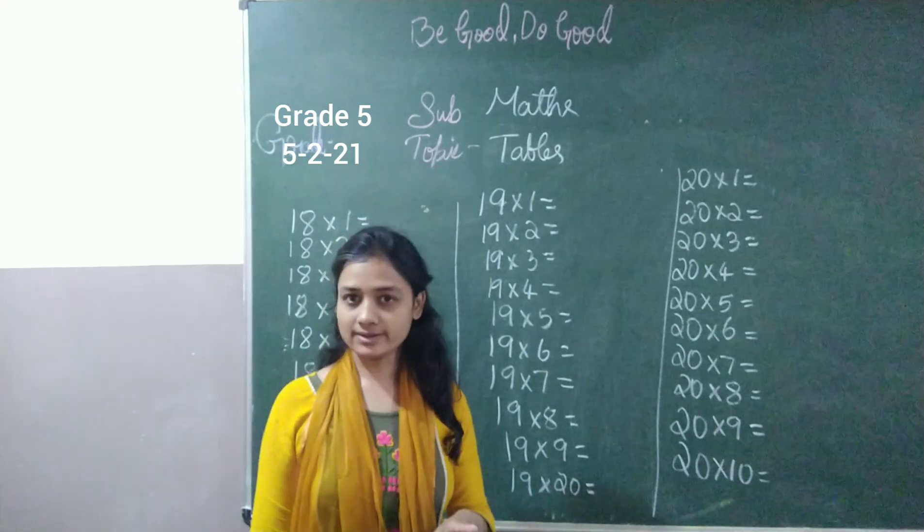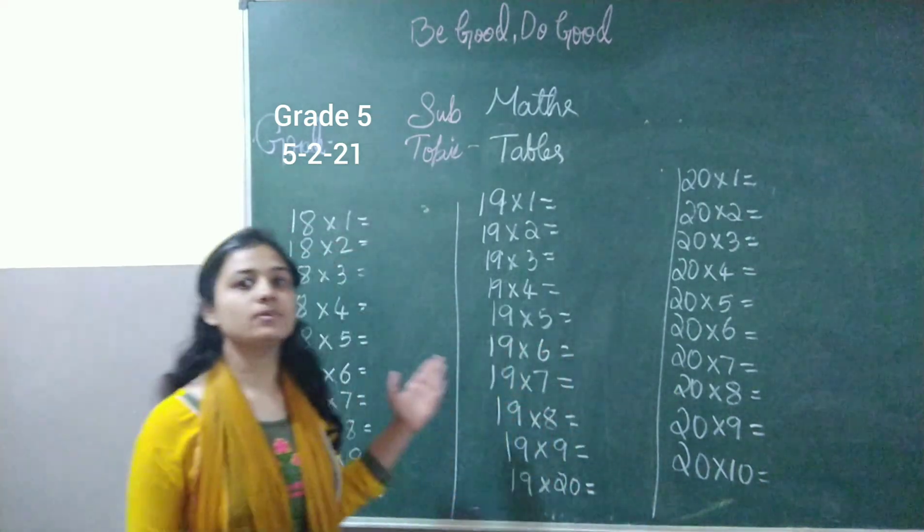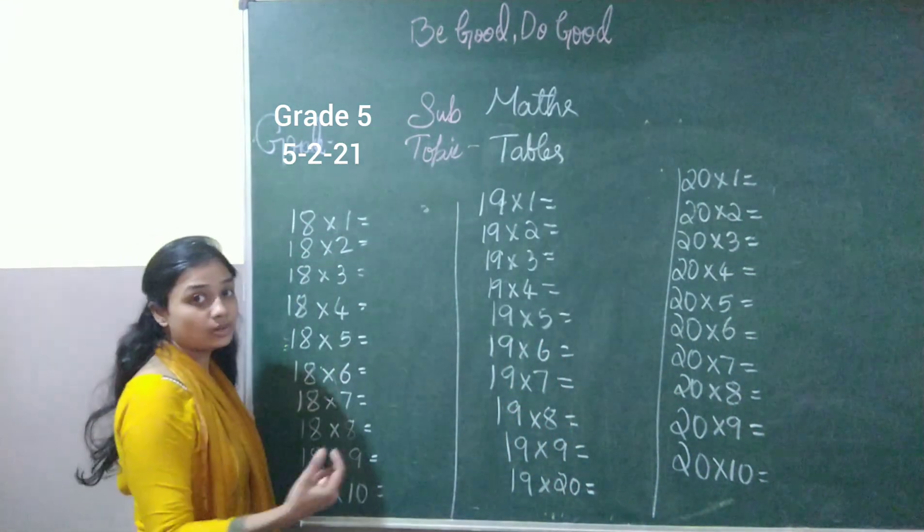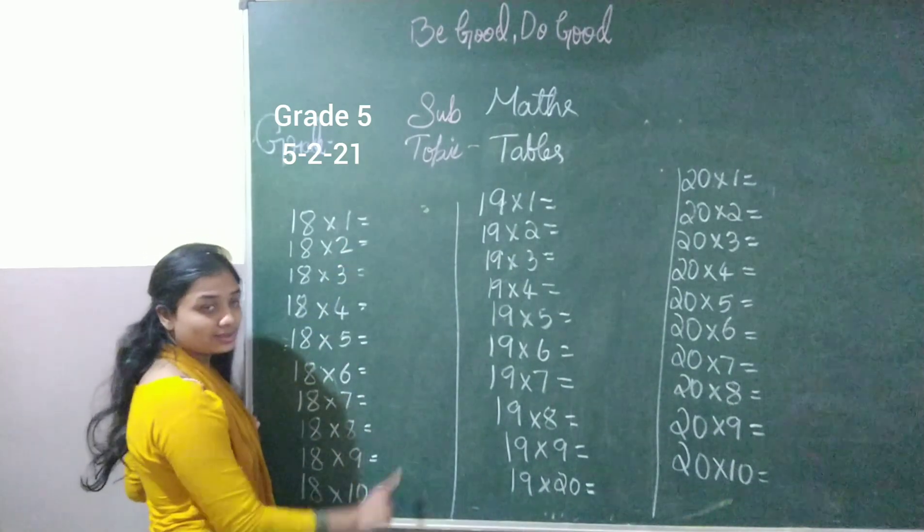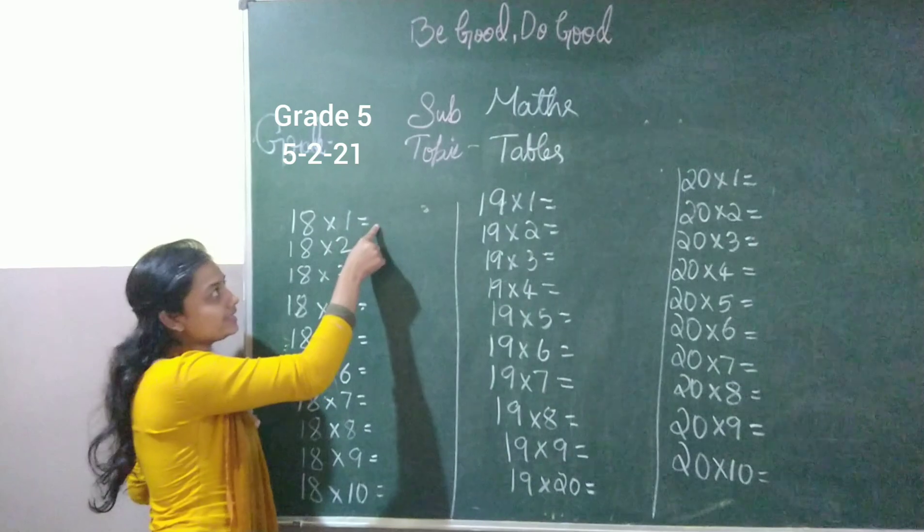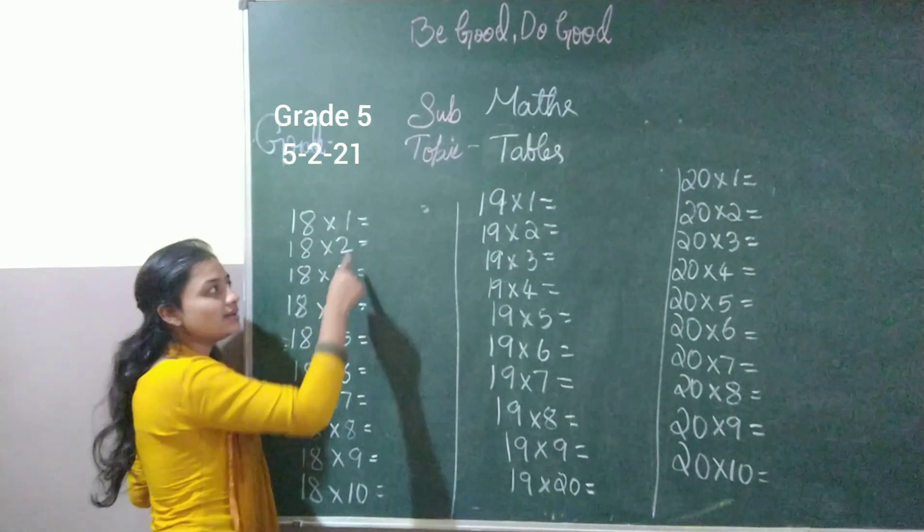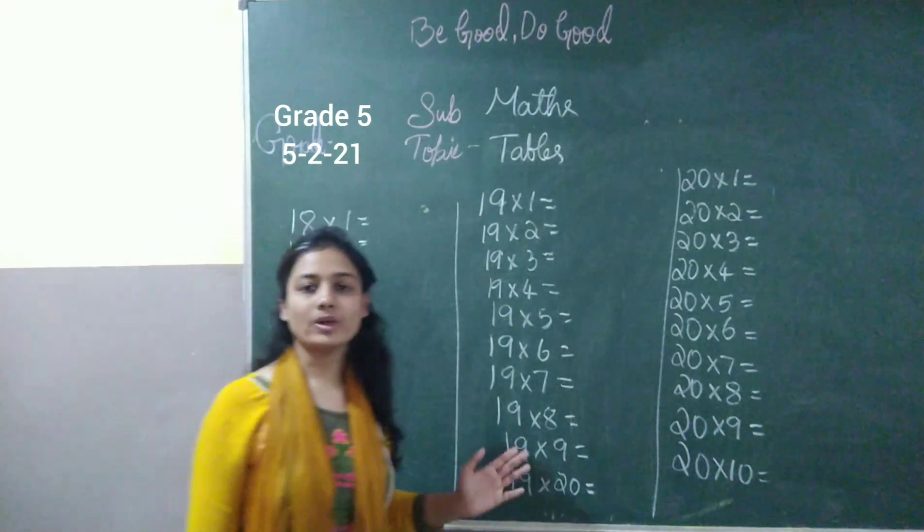So how did you learn tables from 12 to 17? You used to write the tables of, if I can take example of 8 here. You used to write the tables of 8 first, then take the tenth number right there, add the tenth number with the number here, write that answer. That is how you learn tables from 12 to 17.